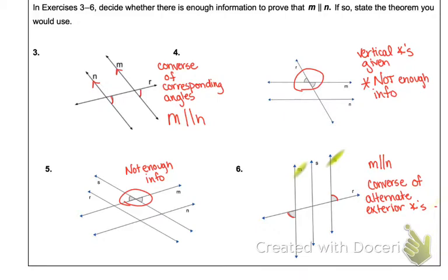Remember, if you know the lines are parallel, it's the normal theorem. If you're using the angles to prove the lines are parallel, then you're going to throw the term converse in front.